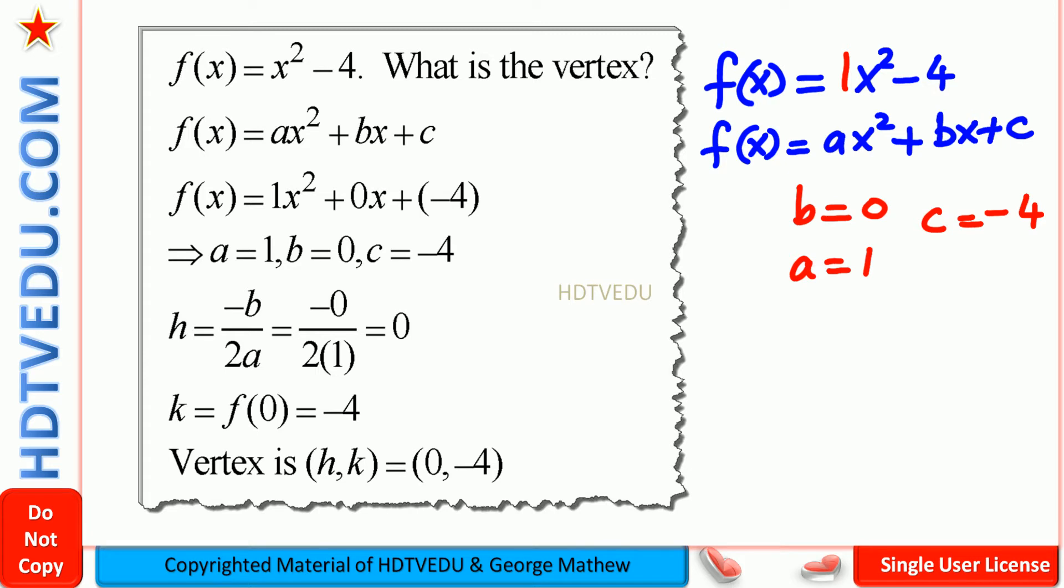Immediately, we see that h equals negative b over 2a. So what is b? b is 0. And what is 2 times a? a is 1. 0 divided by anything is 0, so h equals 0.